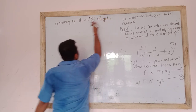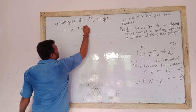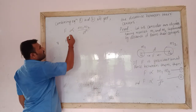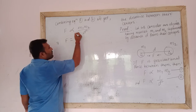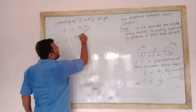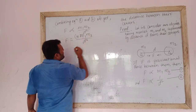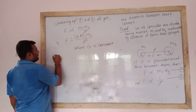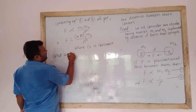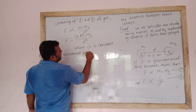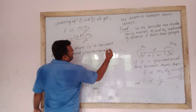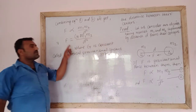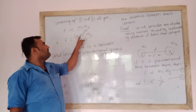Combining the equations, F is directly proportional to M1 times M2 divided by D squared. Replacing the proportionality sign with an equals sign, we introduce a constant G, giving us F equals G times M1 times M2 divided by D squared, where G is the universal gravitational constant.